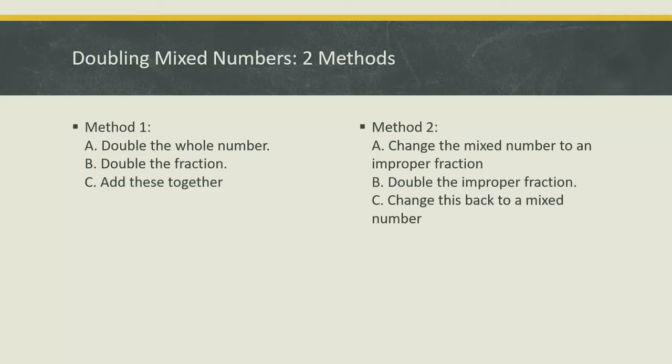In method two, we'll change the mixed number to an improper fraction. Then we're going to double the improper fraction and change it back to a mixed number. In both cases, you'll want to make sure that you reduce your fractions.